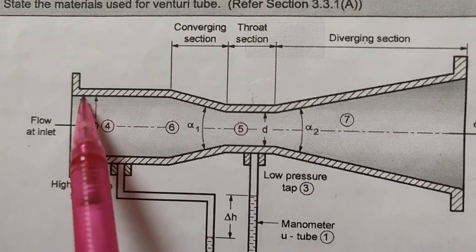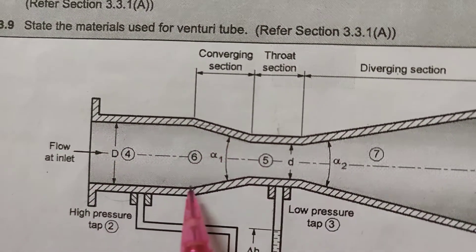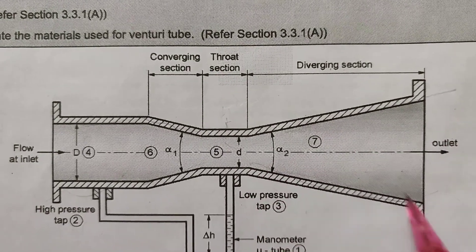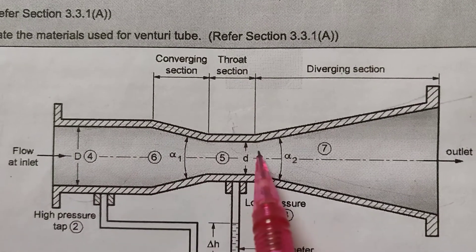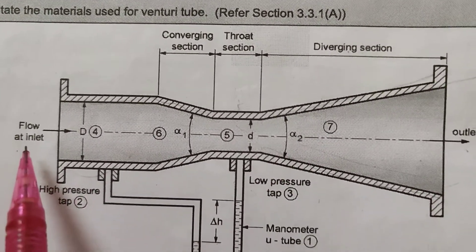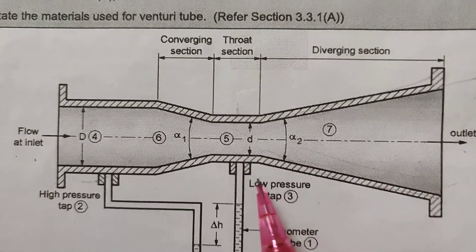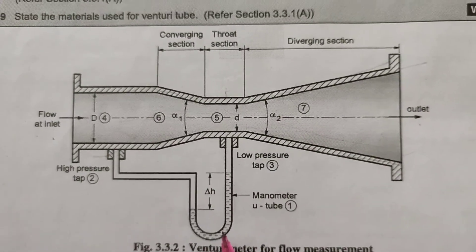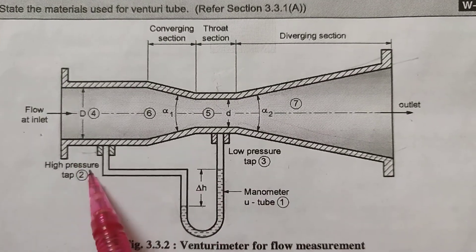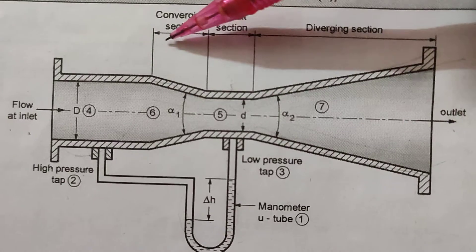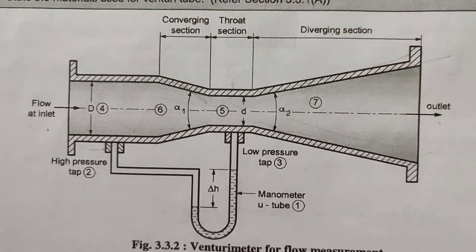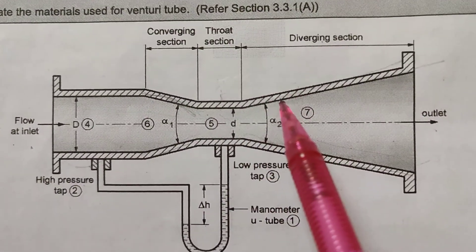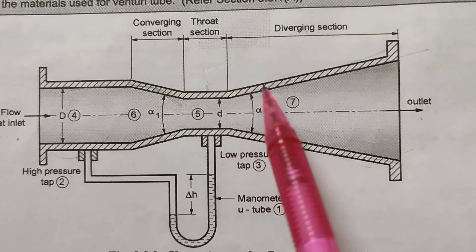Looking at its shape: first there is the big diverging part, then the throat section which becomes small, then the diameter increases again in the diverging section. From inlet to outlet, the outlet diameter will increase. Here at the inlet is the high pressure tap, and here is the low pressure tap. This is our U-tube manometer connected here. The converging section means this diameter is small — that is the throat section. The diverging section means after the throat section our diameter is increased.